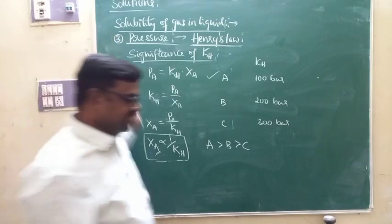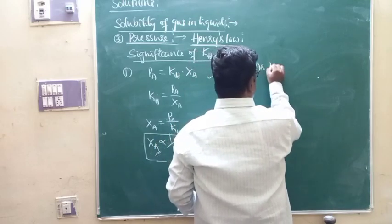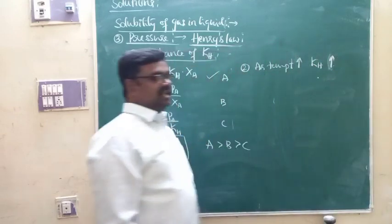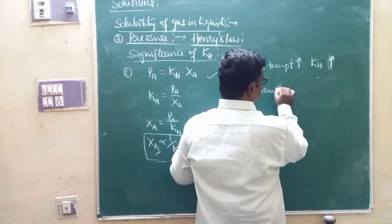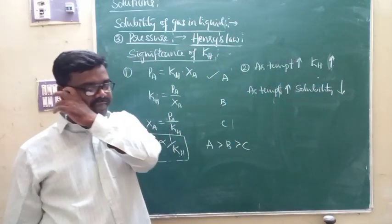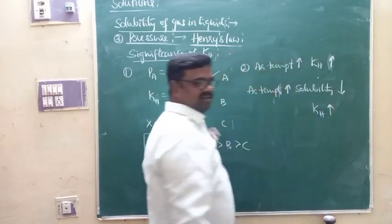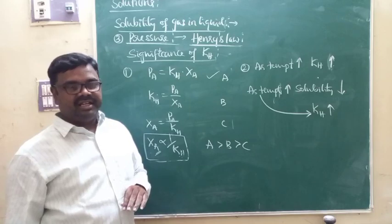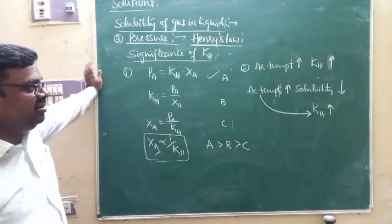The second significance: as temperature increases, KH value also increases. This is because increasing temperature decreases solubility of gas in liquid, and since solubility is inversely proportional to KH, when solubility decreases, KH increases. Therefore, as temperature increases, KH also increases.